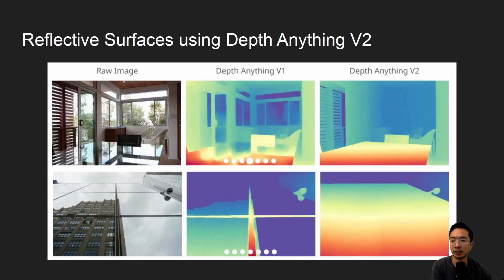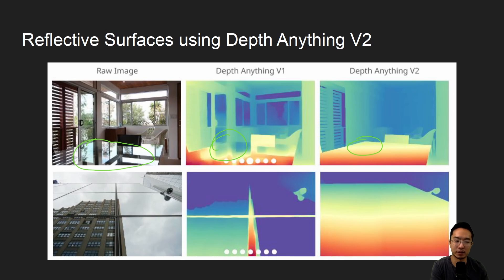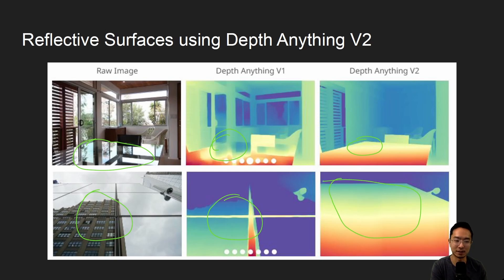Looking at reflective surfaces: on a table with a lot of reflection, Depth Anything V1 treats the reflection as part of the background, whereas V2 correctly treats the reflective part of the table as part of the table in the depth map. Similarly, for a reflective building, V1 thinks it's seeing another building, while V2 correctly treats it as just a reflection.